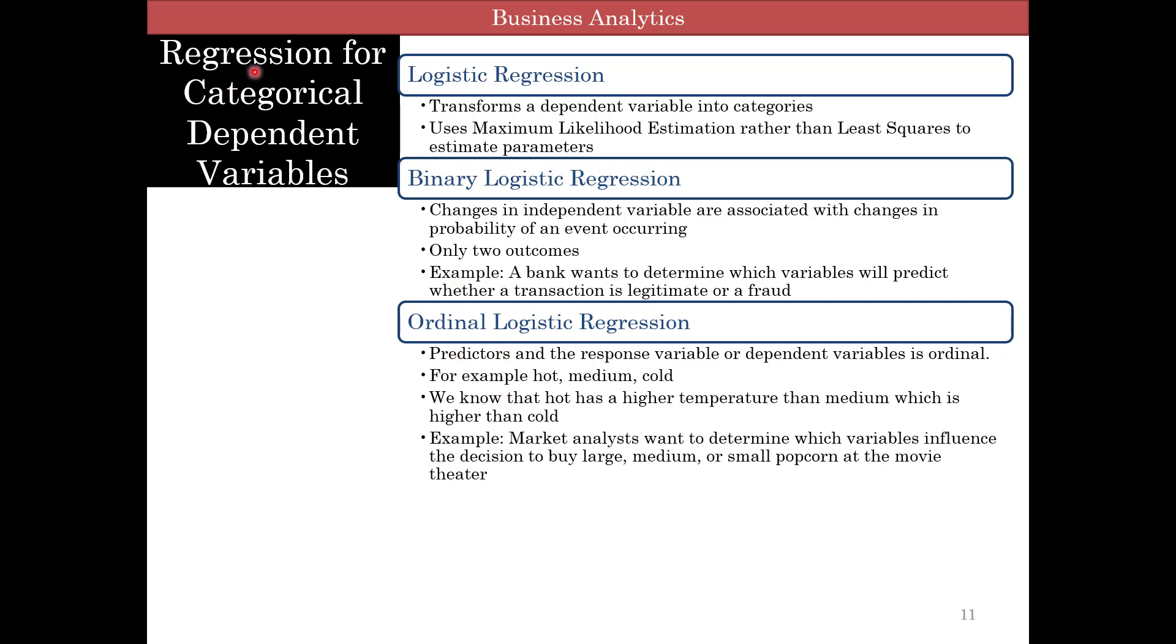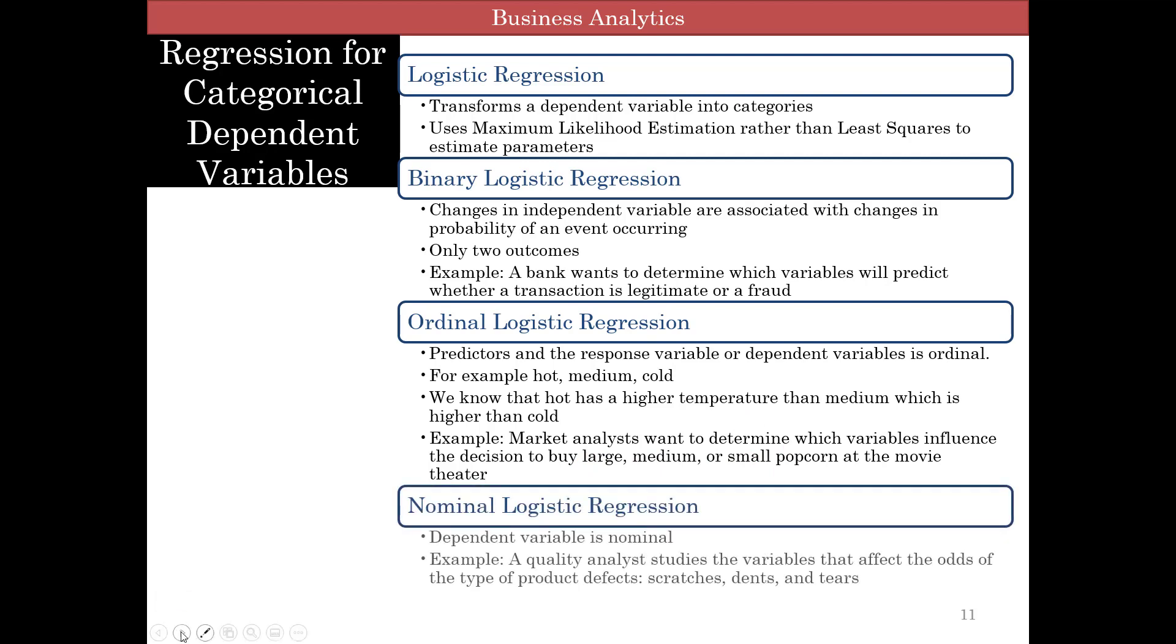Ordinal logistic regression is when your dependent variable categories has more than two categories and it has some kind of rank, like hot, medium, or cold. For example, market analyst wants to determine which variables influence the decision to buy large, medium, or small popcorn. You know that large is bigger than medium, which is bigger than small. So there is a rank here. So you can use ordinal logistic regression. And then nominal logistic regression is, here is an example, quality analyst studies the variables that affect the odds of a product effects, whether you have scratches, dents, or tears. Each one of them is a category, and so that would come under nominal logistic regression.